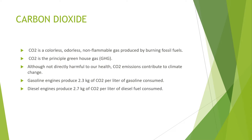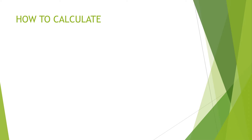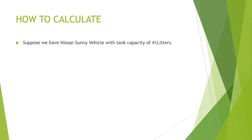Gasoline engines produce 2.3 kg of carbon dioxide per liter of gasoline consumed. Diesel engines produce 2.7 kg of carbon dioxide per liter of diesel fuel. So how do we calculate the total emission of carbon dioxide? Suppose we have a Nissan Sunny vehicle with a tank capacity of 41 liters.